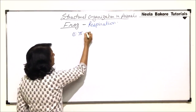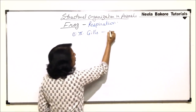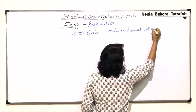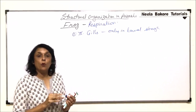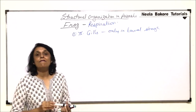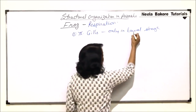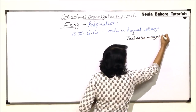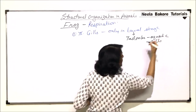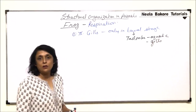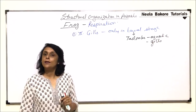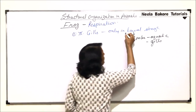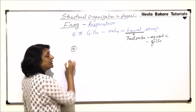First is through gills, seen only in the larval stage. The larva is the tadpole, and tadpoles have well-developed gills. Tadpoles are aquatic and they have gills. Gills are thin membranous structures through which gaseous exchange takes place. So through gills, respiration is seen only in this larval stage, that is the tadpole.